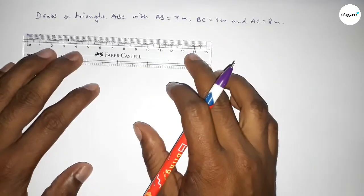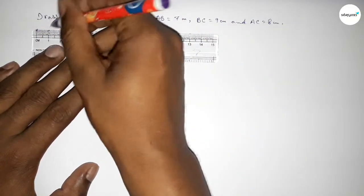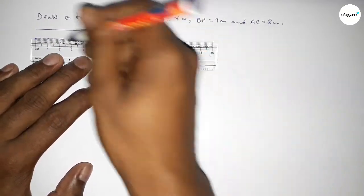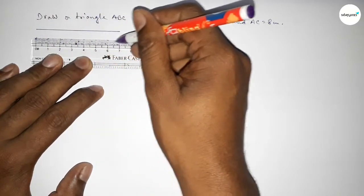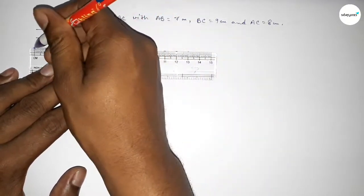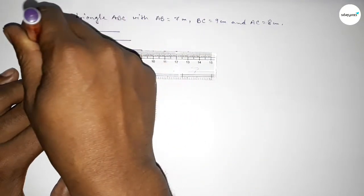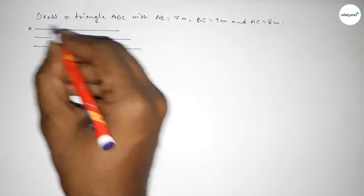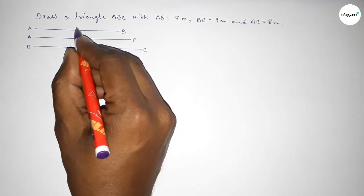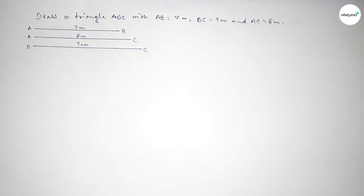First, drawing a line of length 7 centimeter — starting from zero, this is 7 centimeter. Drawing another line of length 8 centimeter — starting from zero, this is 8 centimeter. Drawing another line of length 9 centimeter — starting from zero, this is 9 centimeter. So this line is AB, this line is AC, and this one is BC.